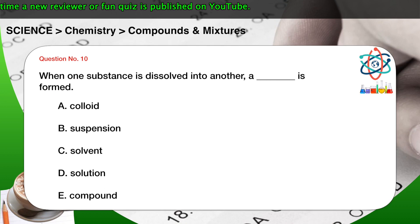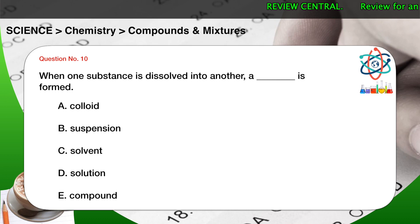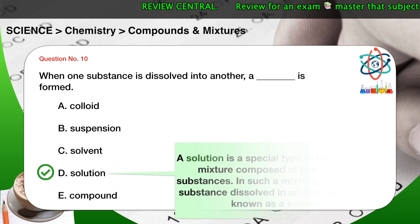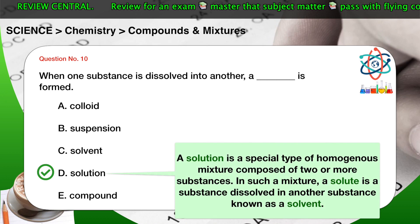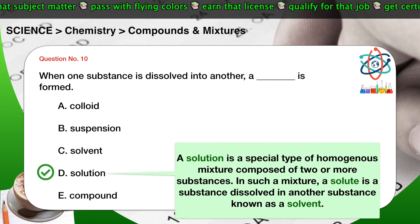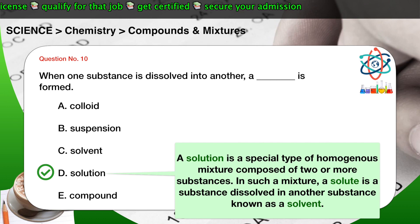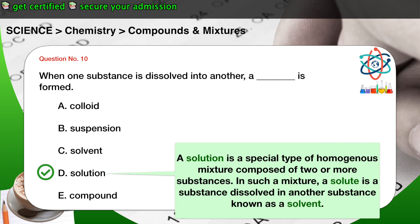Question number 10. When one substance is dissolved into another, a blank is formed. A. Colloid. B. Suspension. C. Solvent. D. Solution. E. Compound. The correct answer is D. A solution is a special type of homogeneous mixture composed of two or more substances. In such a mixture, a solute is a substance dissolved in another substance known as a solvent.